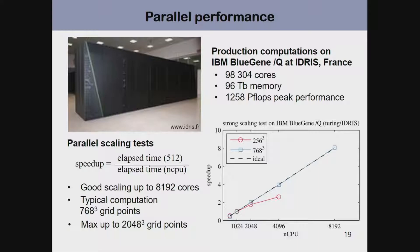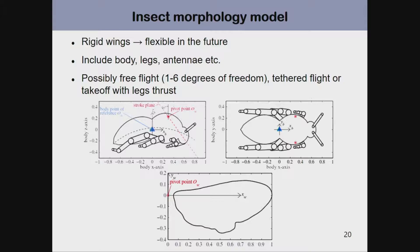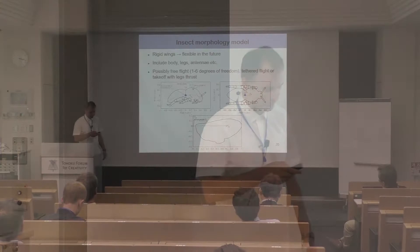Most of the computations shown have been carried out on Blue Gene. The code scales well when the problem is large enough — typically larger than 768³ grid points — and can scale up to 8,000 cores. Now I will show simulations of insects: the morphology is as complete as possible, including wing shape and body shape.